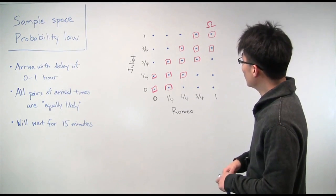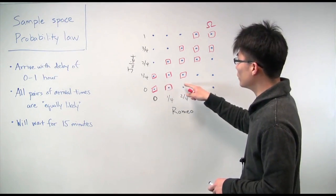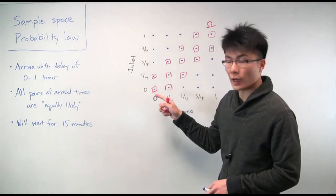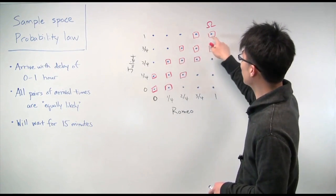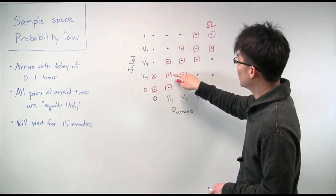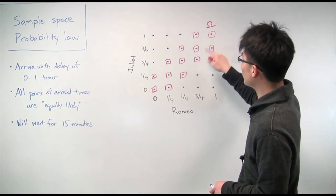result in the two of them arriving within 15 minutes of each other. All right, so because each one has a probability of 1 over 25, all we really need to do now is just count how many outcomes there are. So counting them up, we get 13.